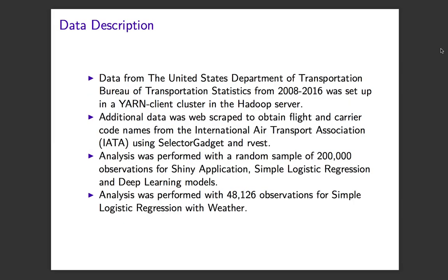The data for this project was sourced from the United States Department of Transportation, Bureau of Transportation Statistics from 2008 to 2016, which was set up in a YARN client cluster in the Hadoop server, with additional data web scraped. The analysis was performed with a random sample of 200,000 observations for the Shiny application, simple logistic regression and deep learning model, and with about 48,000 observations for simple logistic regression with weather.